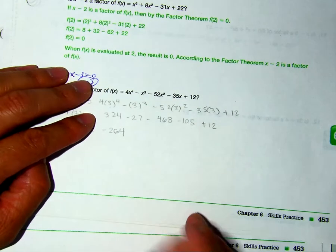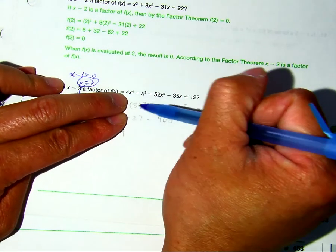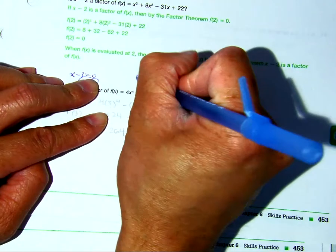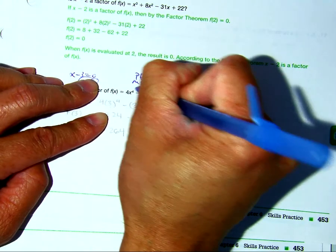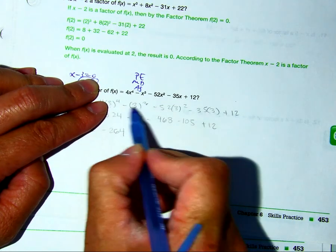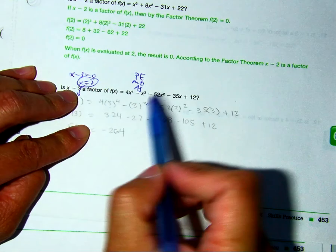Good, this student did not get tricked. This is 3 cubed, which is 27, and then you do the negative 1. Again, if that helps you, you can just write PEMDAS here, and that's why you're not doing a negative 3 cubed.